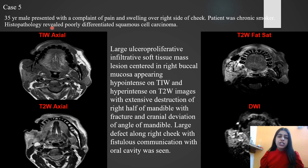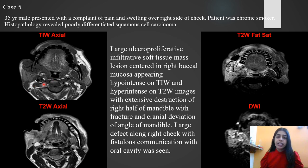In the next case, a patient presented with pain and swelling over the right side of the cheek. The patient was a chronic smoker and histopathology revealed a poorly differentiated squamous cell carcinoma. MRI images showed a large ulceroproliferative soft tissue lesion centered in the right buccal mucosa, appearing hypointense on T1-weighted images and hyperintense on T2-weighted images, with extensive destruction of the right half of the mandible with fracture and cranial deviation of the angle of the mandible. A large defect was seen along the right cheek with fistulous communication with the oral cavity.